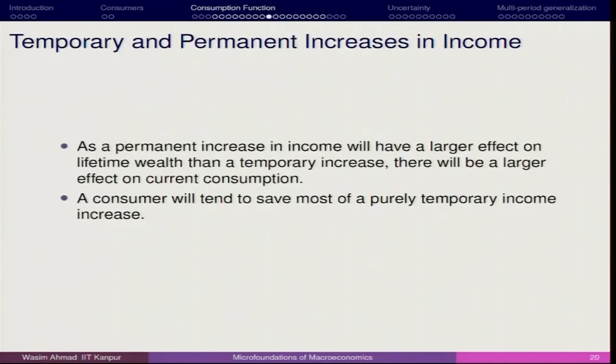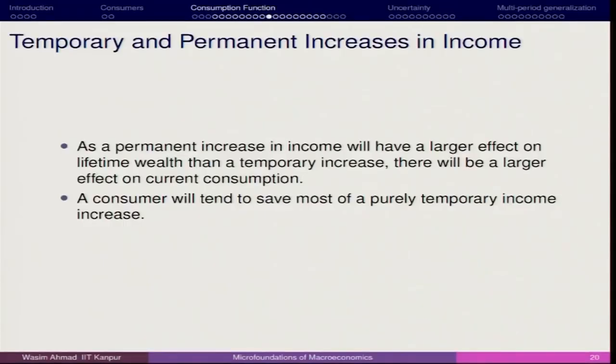Now, in most macro textbooks where you read about consumption theory, you have the permanent income hypothesis by Modigliani. This permanent income hypothesis describes how the representative consumer will decide about whether current or future consumption is increasing or decreasing. If you think about temporary and permanent income, what do we mean by temporary and permanent income?